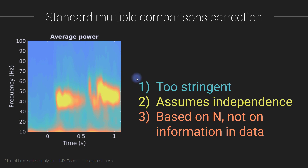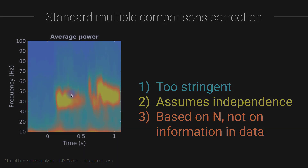However, for time frequency statistics, Bonferroni correction is a poor choice because of these three features. We need some kind of correction for multiple comparisons given the enormous number of tests, yet Bonferroni — the standard go-to method — is not appropriate. What is the right way to deal with multiple comparisons that is statistically appropriate while still sensitive enough to identify real differences? That comes up in the next video.